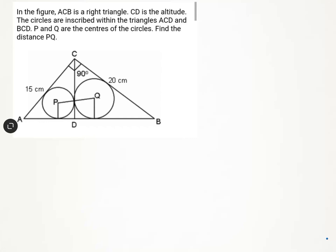In the given triangle ABC, angle C is 90 degrees. From C, if we drop a perpendicular to AB, the altitude CD splits the triangle into two smaller triangles: the left side triangle ACD and the right side triangle BCD. The left side triangle has an incircle whose center is P, and similarly the right side triangle has an incircle whose center is Q. We need to find the distance between P and Q.